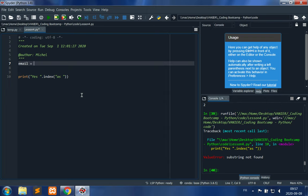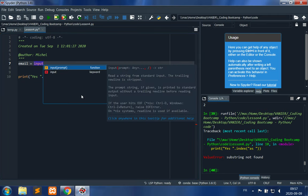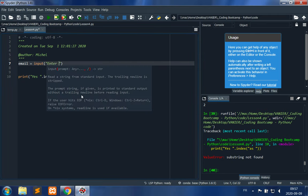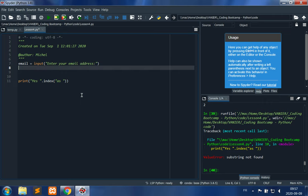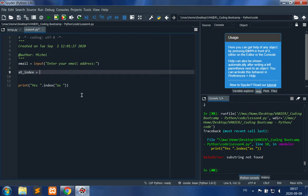Email is equal to input 'enter your email address'. Then we will use email.index to get the at symbol index, so at_index is equal to email.index, and we place the at symbol inside this index. We're trusting that the user is actually going to input the at symbol.